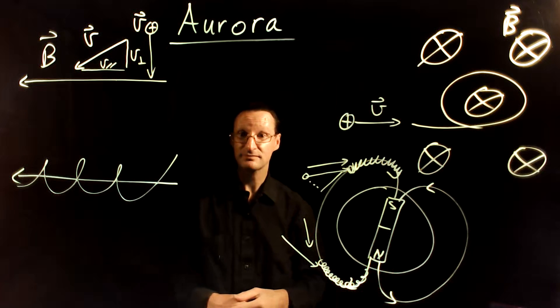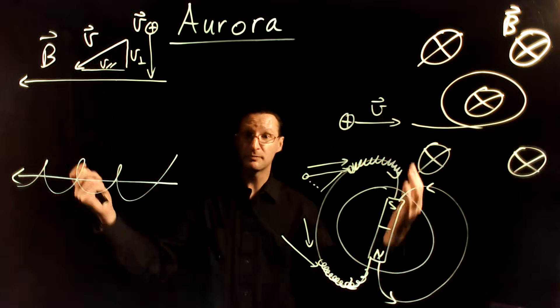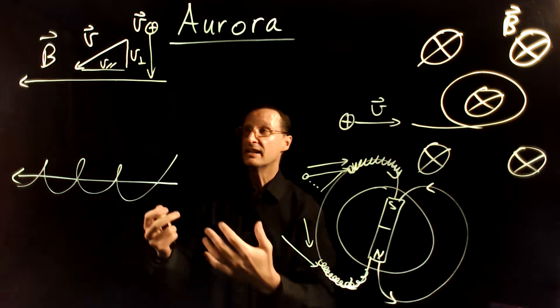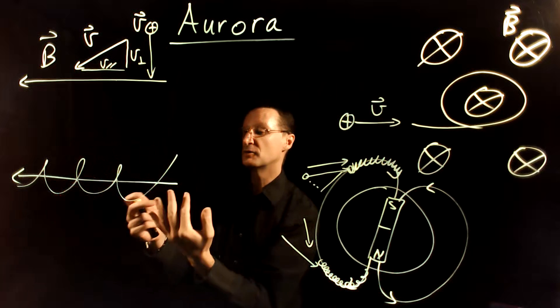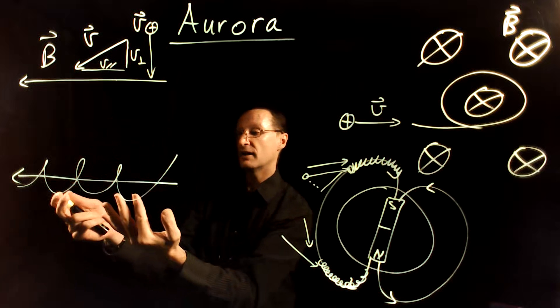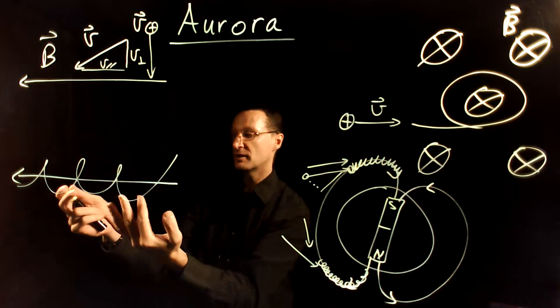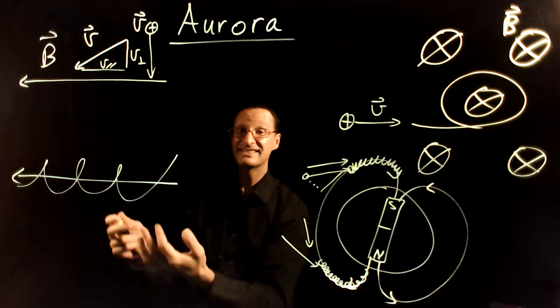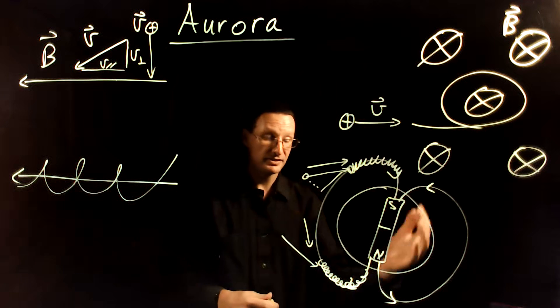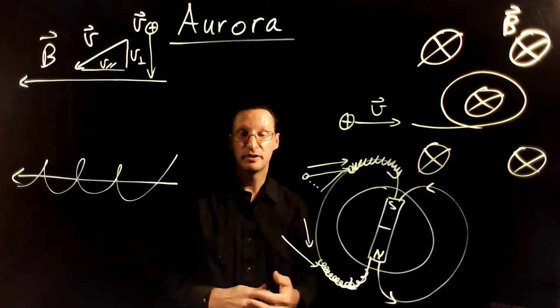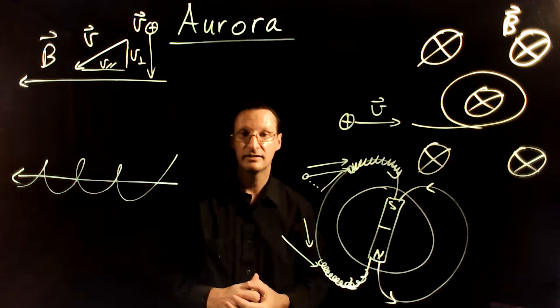Hopefully this helps you understand that the general motion of a charged particle in a magnetic field is a helix, and that this results in these beautiful lights at the poles.